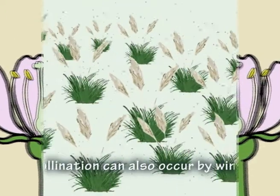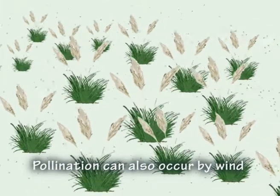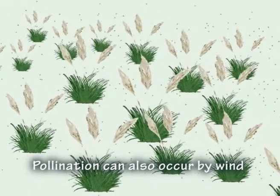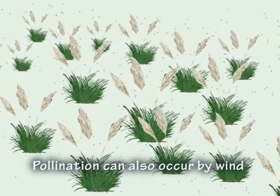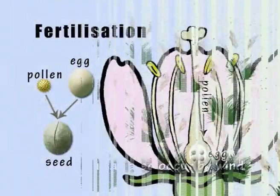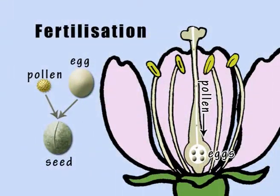Wind is another way in which pollen gets from the stamen to the stigma. After pollination, the male pollen granule and female egg join together to form a seed, in a process called fertilisation.